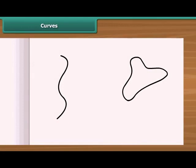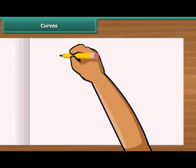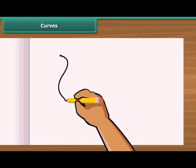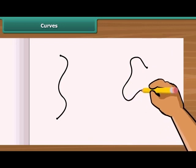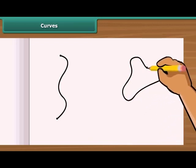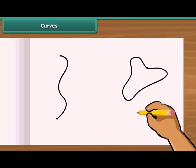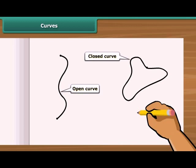Look at the two figures drawn by Sam. In the first curve, it starts from a point and finishes at another point, but in second curve, it starts and finishes at the same point. The first type of curve is called open curve, while the latter is known as closed curve.